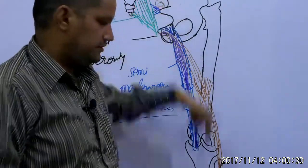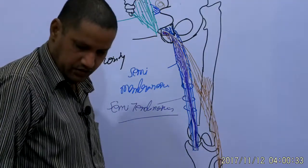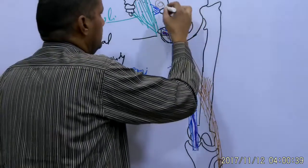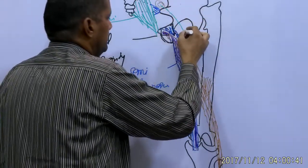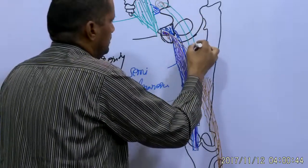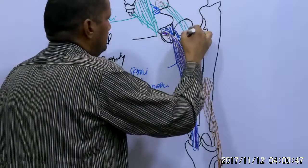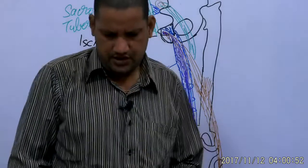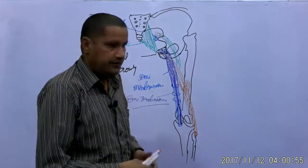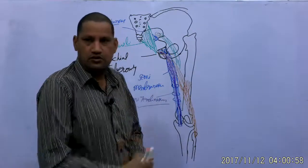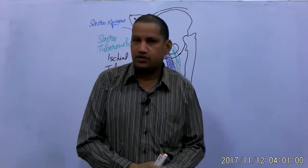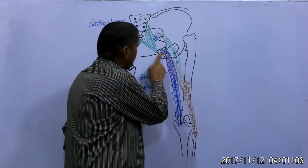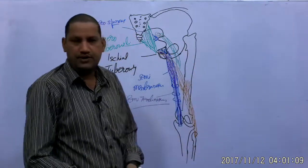The nerve is running down here. This is the sciatic nerve. When we go for intramuscular injection, we should avoid this muscle to prevent the traumatic neuritis. It should be traced between the ischial tuberosity and the greater trochanter of the femur.